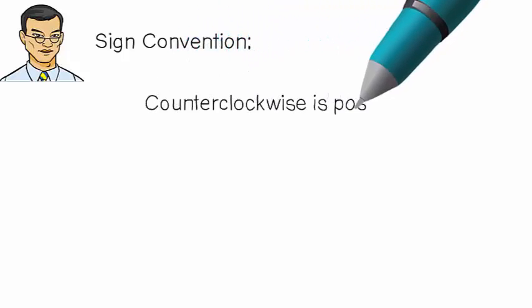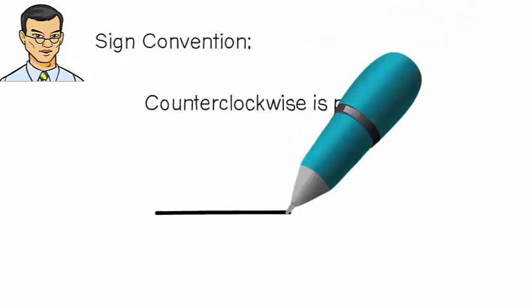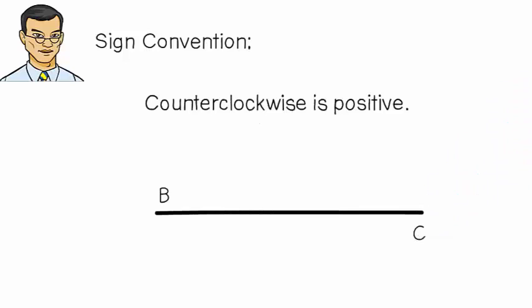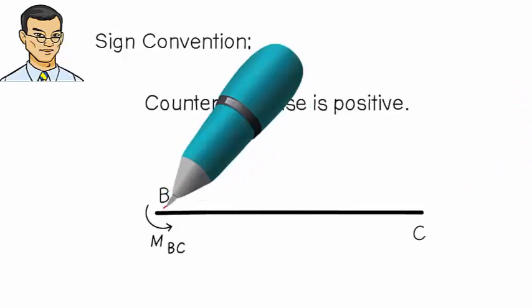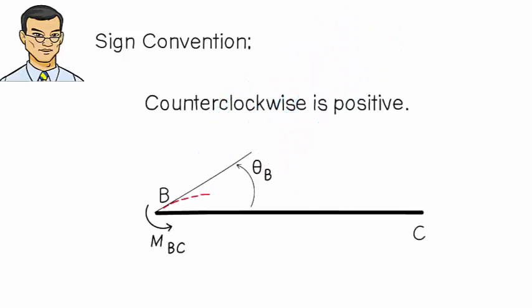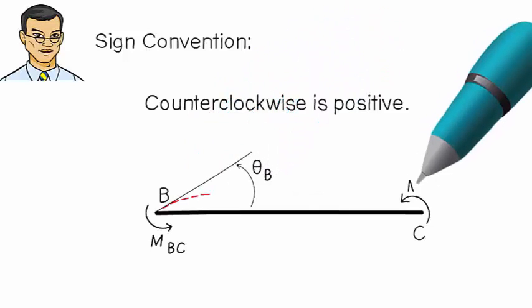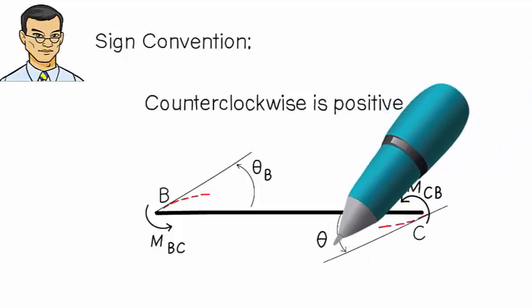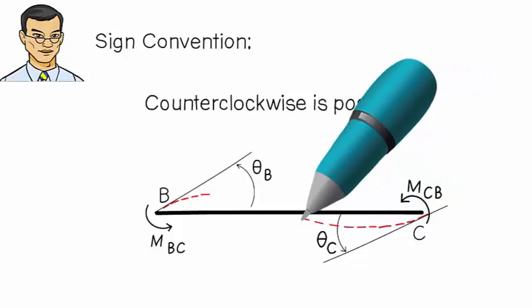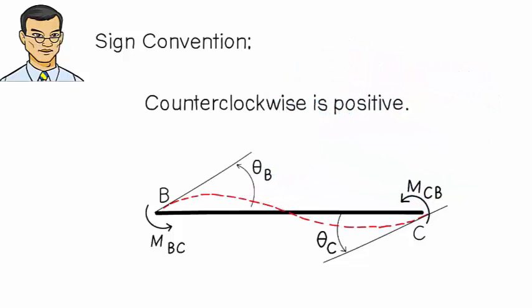I am going to use counter-clockwise direction as positive. So, I am going to place MBC like this causing a positive, counter-clockwise rotation at B. Similarly, we get a positive rotation at C when MCB is placed in the positive direction. This means the entire beam segment is assumed to deflect like this. Now we are ready to get to the essence of this lecture, defining member end moments in terms of end rotations.